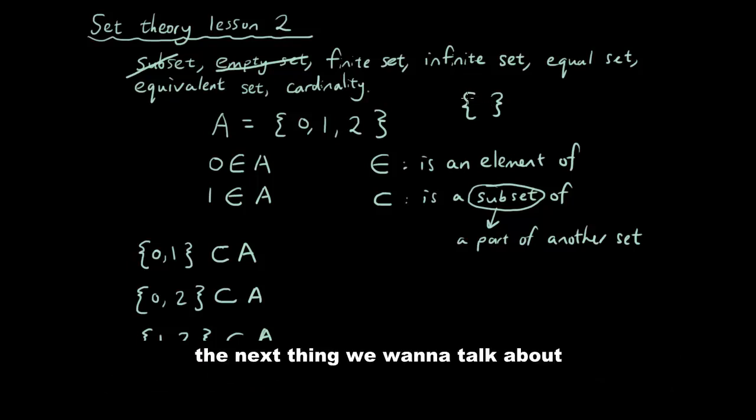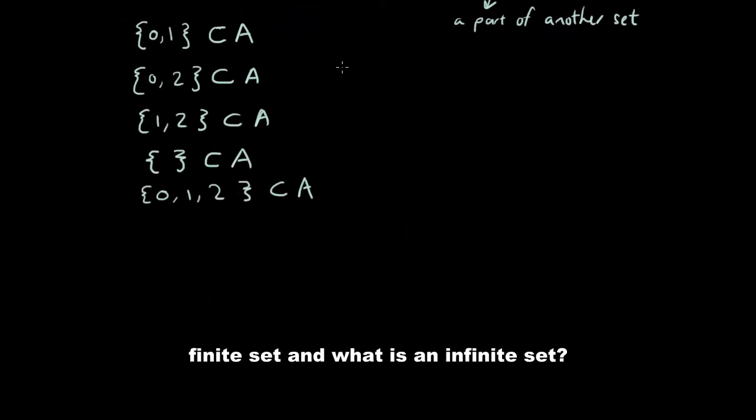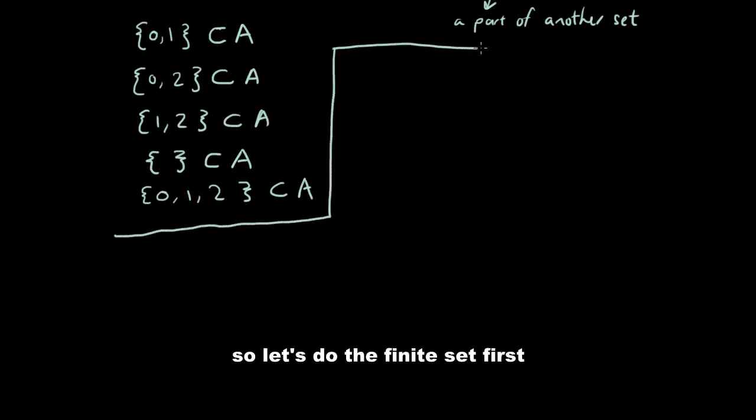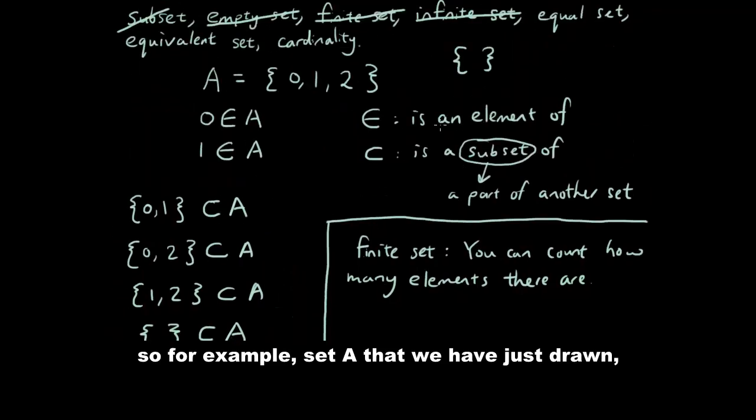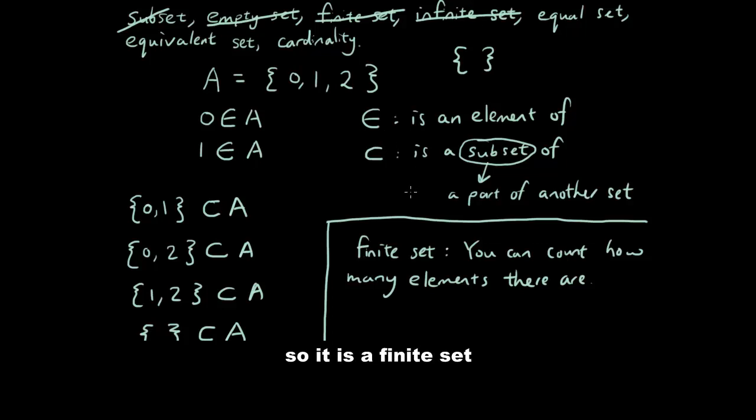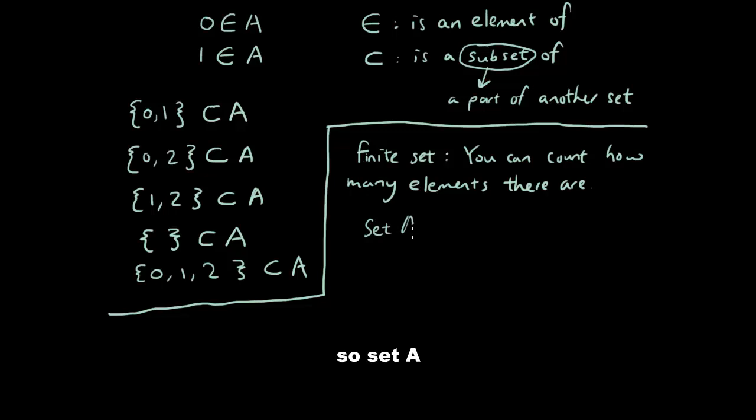The next thing you want to talk about is finite set and infinite set. What is a finite set? A finite set is when you can count how many elements there are in a set. For example, set A that we have just drawn, it has three elements. So it is a finite set.